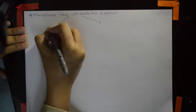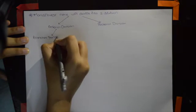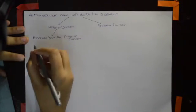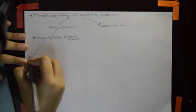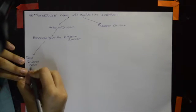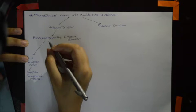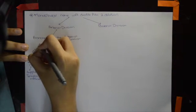The mandibular nerve divides into two divisions: the anterior division and the posterior division. From the anterior division, there are four branches. The first is the deep temporal nerve, which is a muscular branch supplying the temporalis muscle.